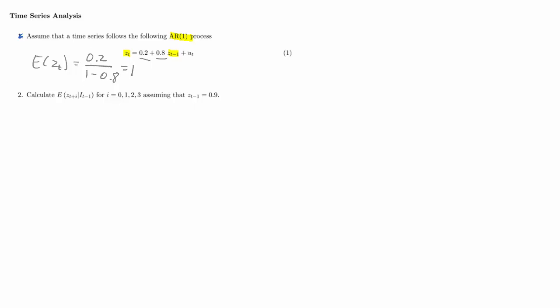So if you don't know anything else, we expect Zt to take a value of 1. However, we are asked to calculate the conditional expectation, conditional on I_{t-1} — that is, all information available at time T minus 1. Let's start with the expectation of Zt given information at T minus 1, and replicate the expectations operator including the conditioning information.